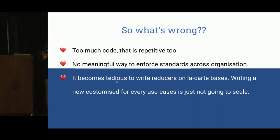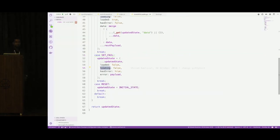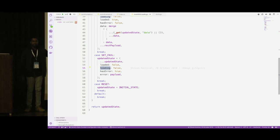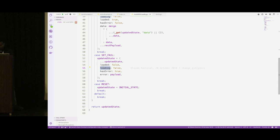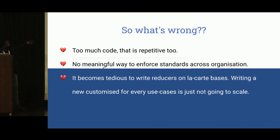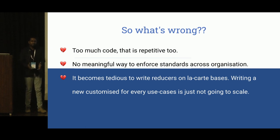There are three problems to focus on. First, we are writing too much code that is repetitive. Second, there's no meaningful way to enforce standards across your organization — one developer calls it 'isLoading', another calls it 'loading', a third says they'll use 'fetch' instead of 'load'. You have no way to enforce any standards. Third, it becomes customized reducers on an ad-hoc basis: for every use case that's slightly different, you write a whole new reducer. That is wrong — these are the basics of programming.